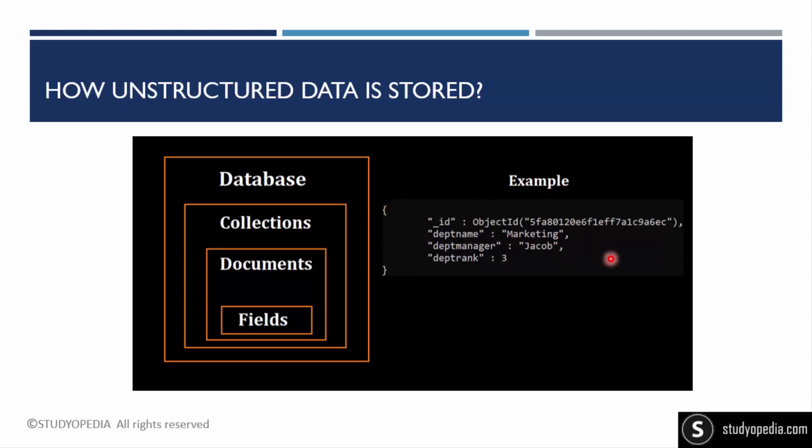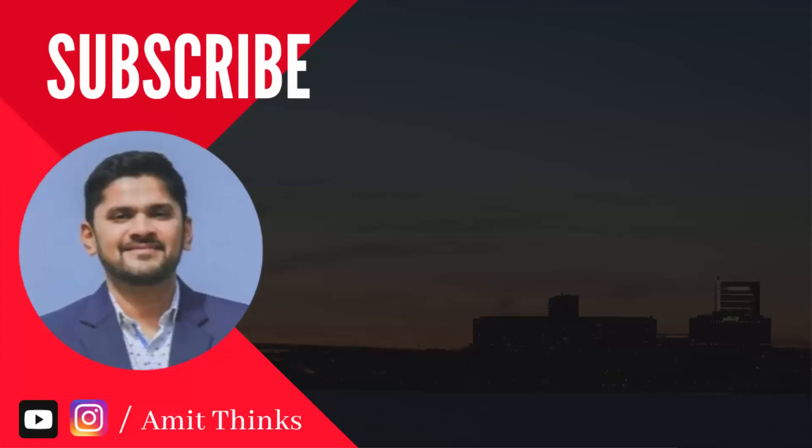In MongoDB, each record has a unique Object ID, and all data is saved in the form of key-value pairs. Unstructured data can be saved in key-value pairs because there is no fixed format for saving it.